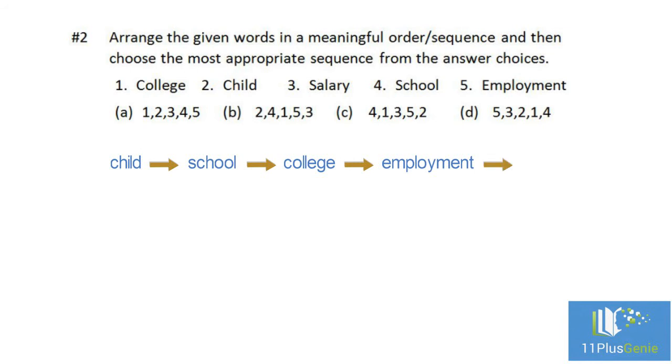The child must go to school, then to college, then he can go into employment and earn a salary. The correct order is 2, 4, 1, 5, 3, which is B.